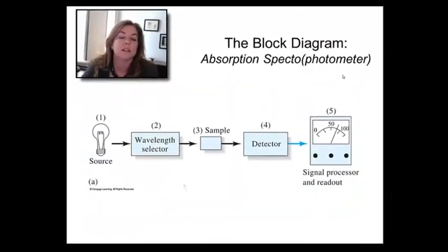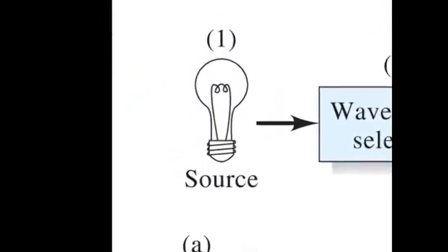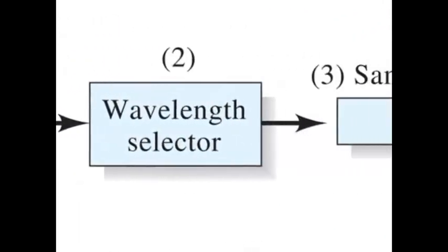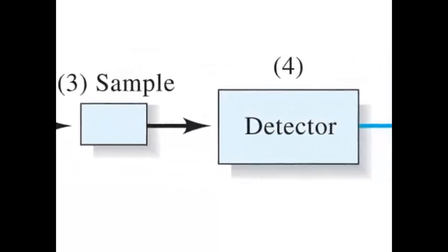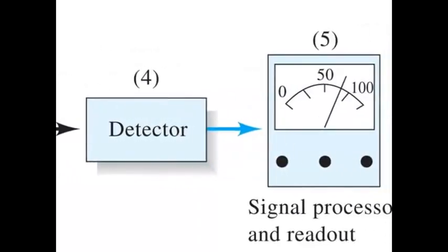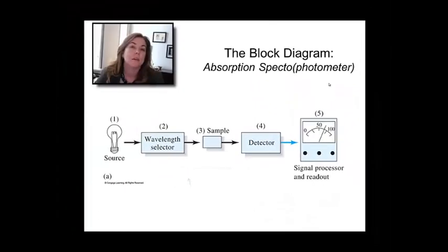Now, if you open up the guts of this thing, this is what you would see. You need to have a source of radiation, a light source. You need to select out a wavelength. You need to interact with your sample, so you have to think of the sample pieces. You've got to detect the light and then convert that to a signal that you can read. There's a couple of things about the simple diagram that are going to be changing as we go through our conversation about spectrophotometers.